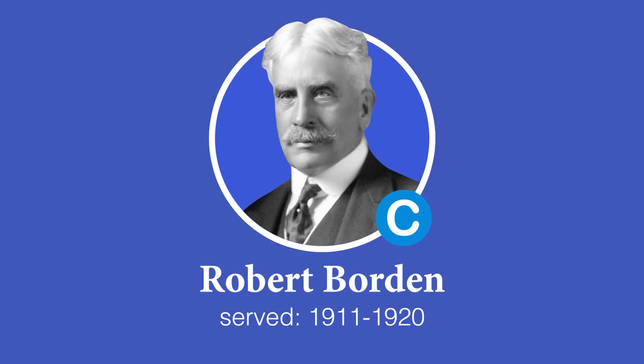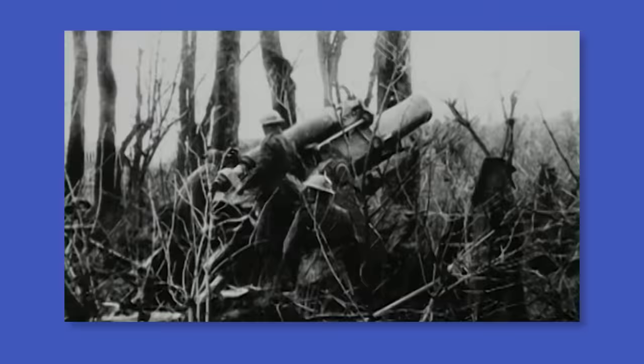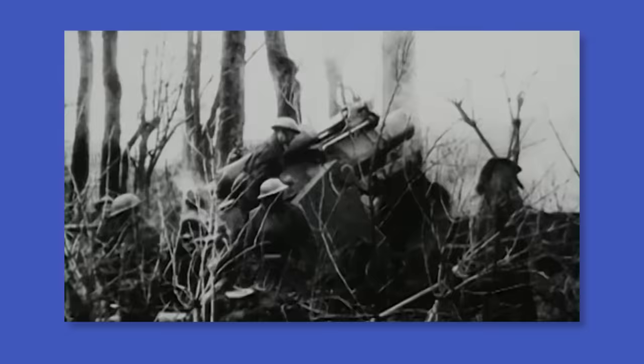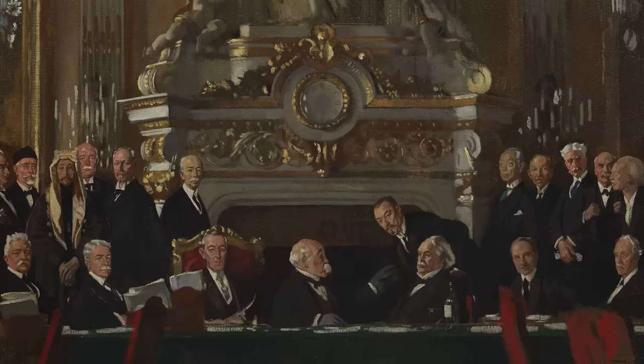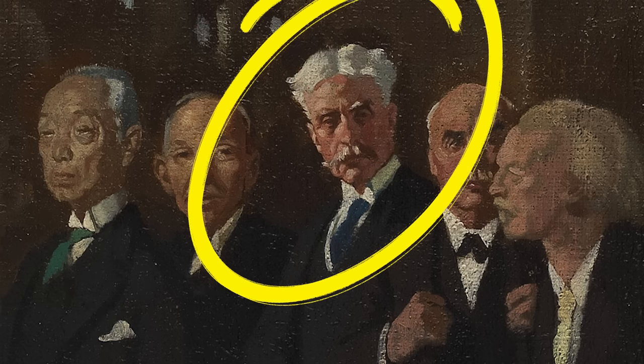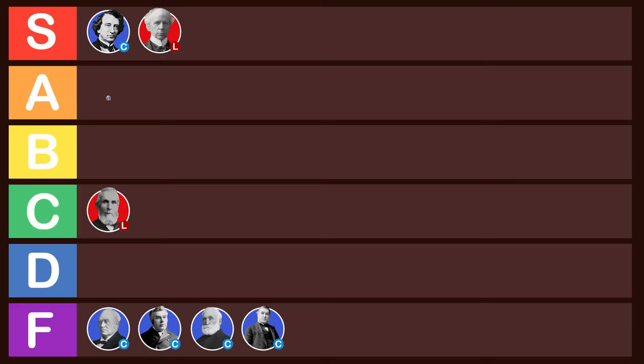Laurier was in turn defeated in the 1911 election by Conservative leader Robert Borden. Today we associate Borden mostly with Canada's participation in the First World War, which to this day is still something that is quite heavily sentimentalized as a time in which Canada sort of really made itself known as a powerful serious country on the world stage and not simply a wimpy British colony. So he would be considered an A-tier Prime Minister.